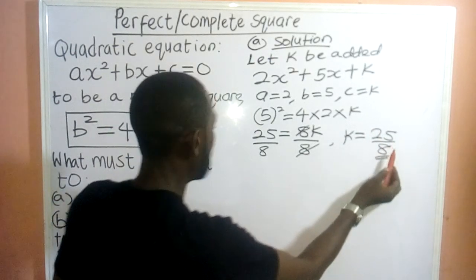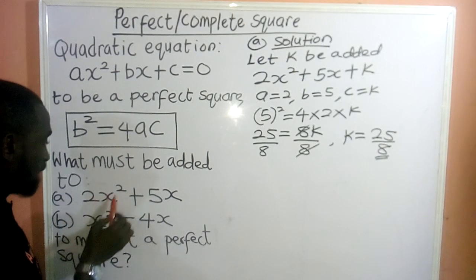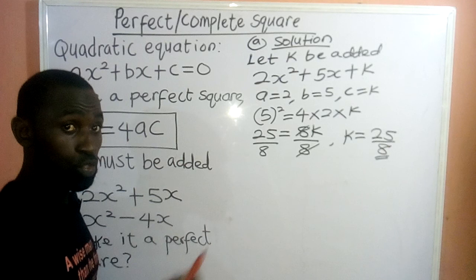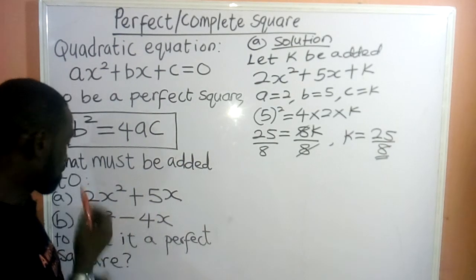So, which implies 25/8 must be added to 2x² + 5x to make it a perfect square. You are done in this class. So, let's take the second question.